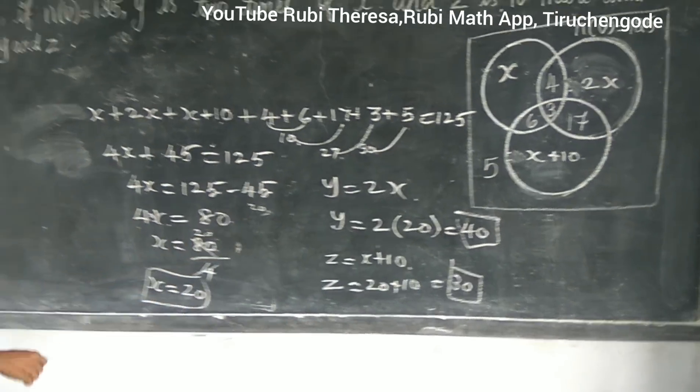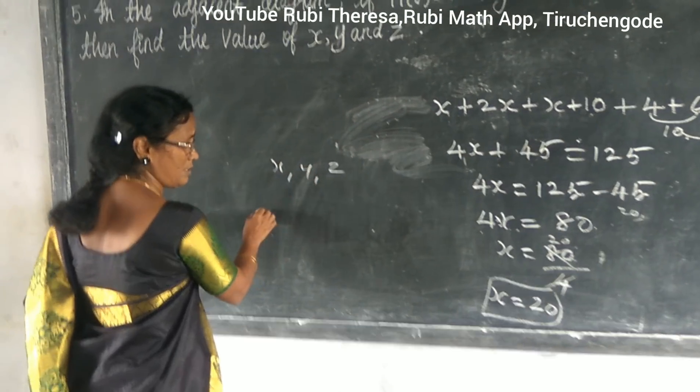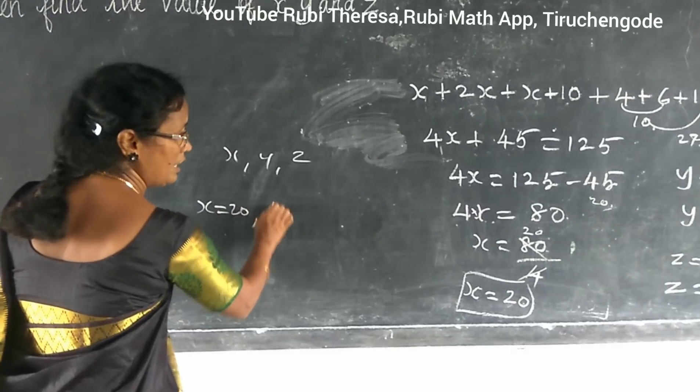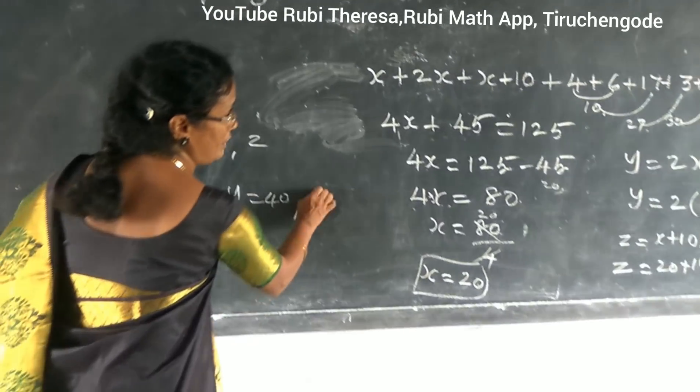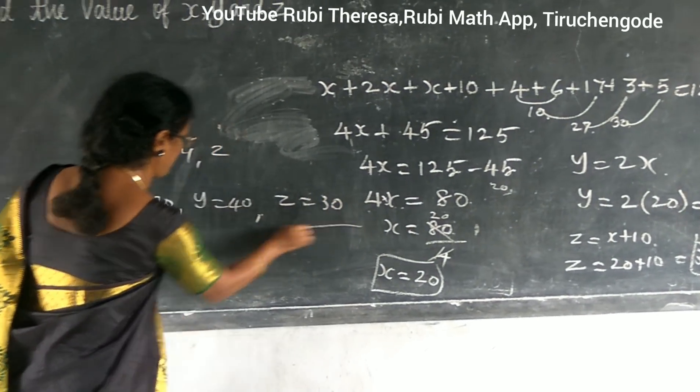So what are the answers? X equal to 20. Y equal to 40. Z equal to 30.